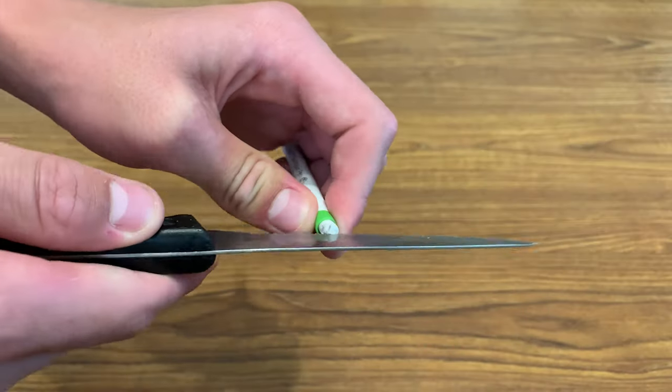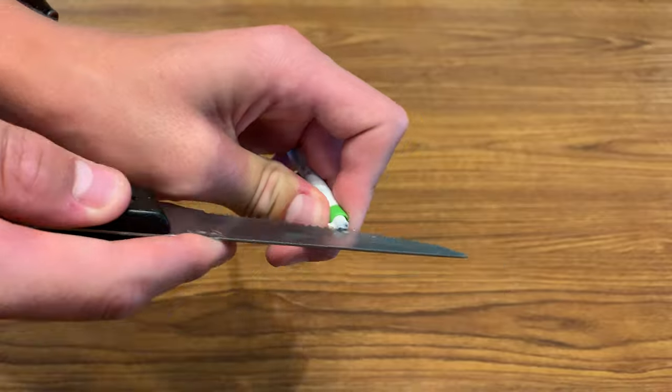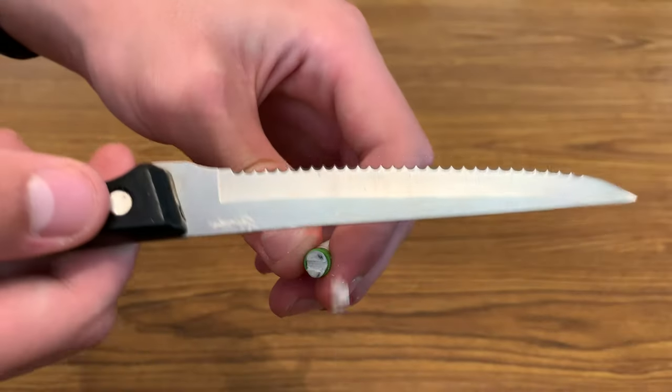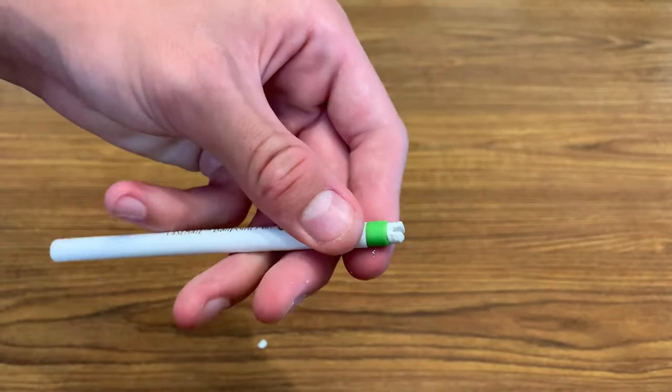Then use the knife to cut two slits right next to each other in the middle of the eraser and remove the smaller centerpiece. This slit is what will hold the rubber bands in place.